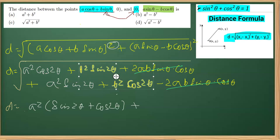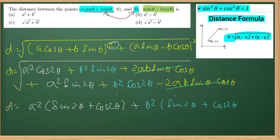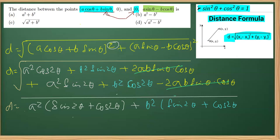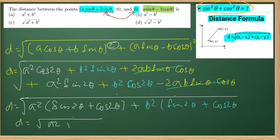We also have b² common from the other part: b² sin²θ + b² cos²θ gives b²(sin²θ + cos²θ), and there is a whole under root over everything. Substituting sin²θ + cos²θ = 1, we get a²×1 + b²×1 = a² + b². Therefore, the distance is √(a² + b²), and C is the correct answer.